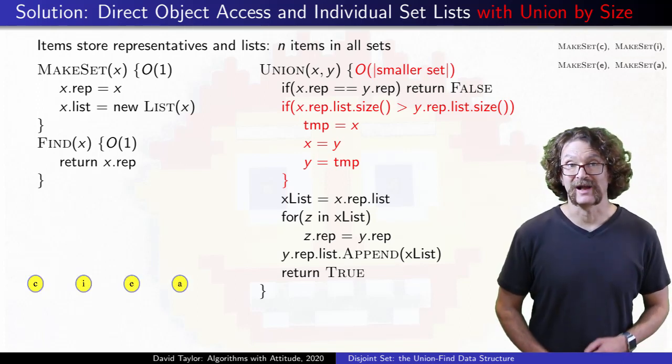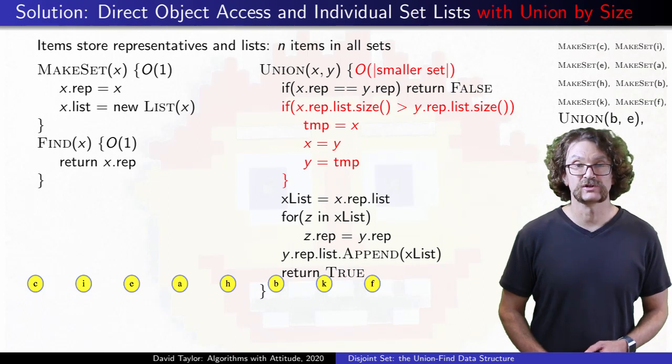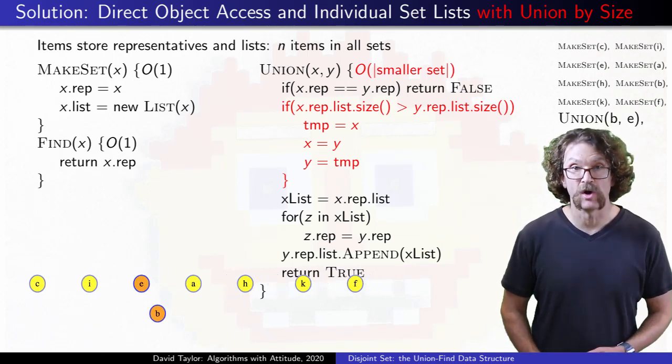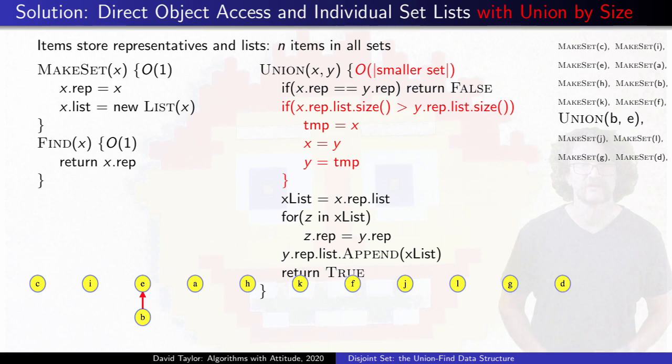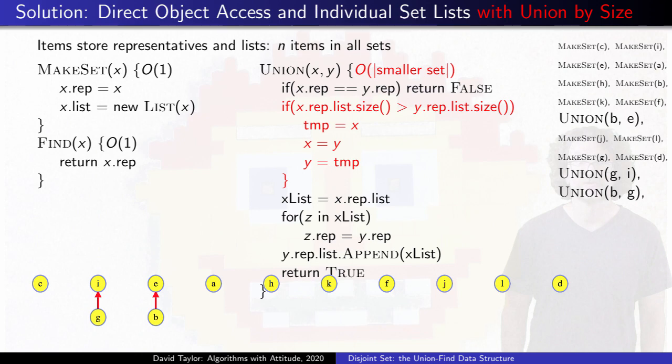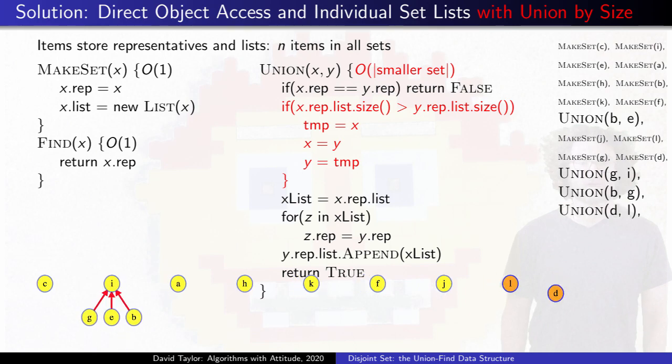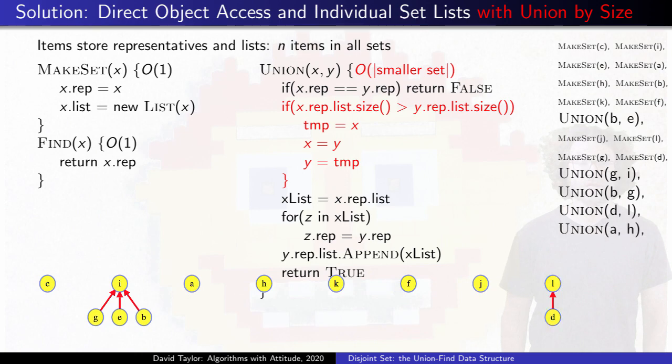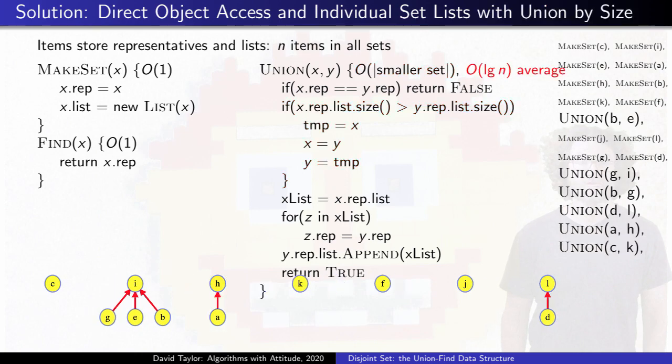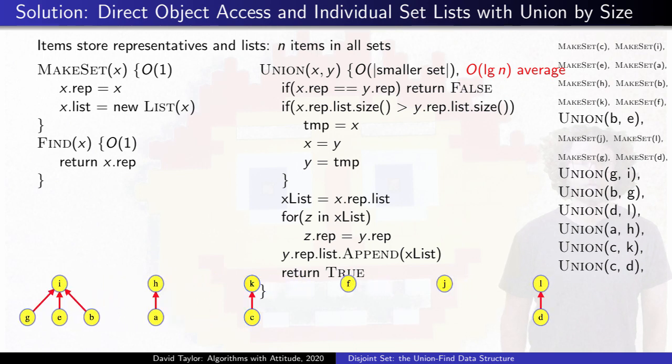Make set and find still take constant time, and unions time is now proportional to the size of the smaller set. If you think about an object in a set, every time its representative gets changed, the size of the set it's in has to at least double, so if there are n total objects, no object can change its representative more than log n times. For this data structure right now, if there are n objects, n calls to union can't take more than n log n time total for log n average. That's not bad, but we are two observations away from awesome.